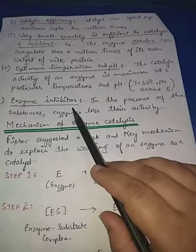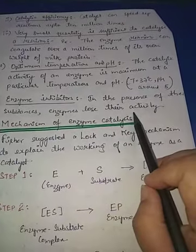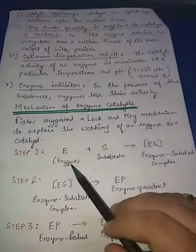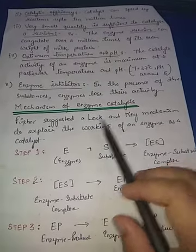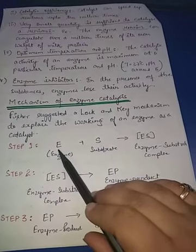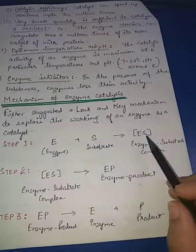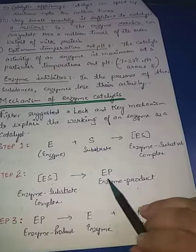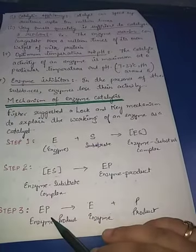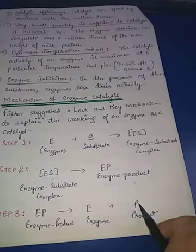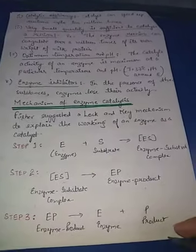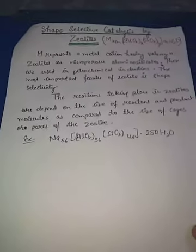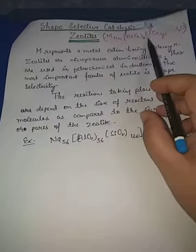Enzyme inhibitors: in the presence of certain substances, enzymes lose their activity — these are called enzyme inhibitors. The mechanism of enzyme catalysis is the lock-and-key mechanism, given by Fischer. The enzyme E acts on a substrate to form an enzyme-substrate complex. This enzyme-substrate complex then gives the product — enzyme-product — from which the enzyme is separated and the product is released. This is how enzyme catalysis takes place.